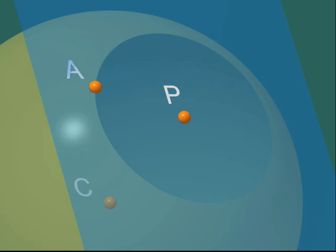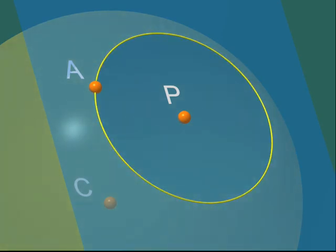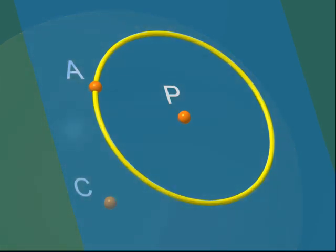Let A be a point which is on the sphere and the plane. Consider the circle in the blue plane with centre P, and that goes through A. We will prove that this circle is contained in the sphere.